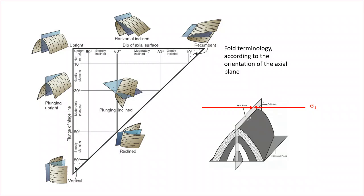Describing and measuring the orientation of the axial planar fold is really important because the axial plane is going to be perpendicular to sigma 1, the maximum principal stress direction. There are lots of different kinds of folds geologically, and their orientations depend on the directions of the maximum principal stresses at the timing of the deformation. So the whole purpose of a fold analysis is to relate the orientation of the fold to the tectonic processes.